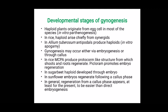Some developmental stages of Gynogenesis are discussed here. Haploid plants originate from the egg cell in most species, and this process is called in vitro parthenogenesis. In rice, haploids are mostly raised from the synergid cells. In Allium tuberosum, antipodals produce haploid plants, and this process is called in vitro apogamy.